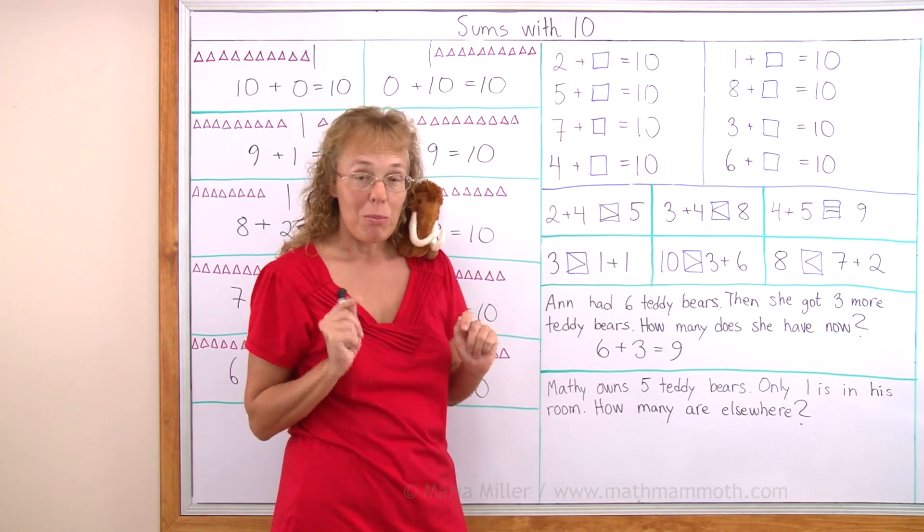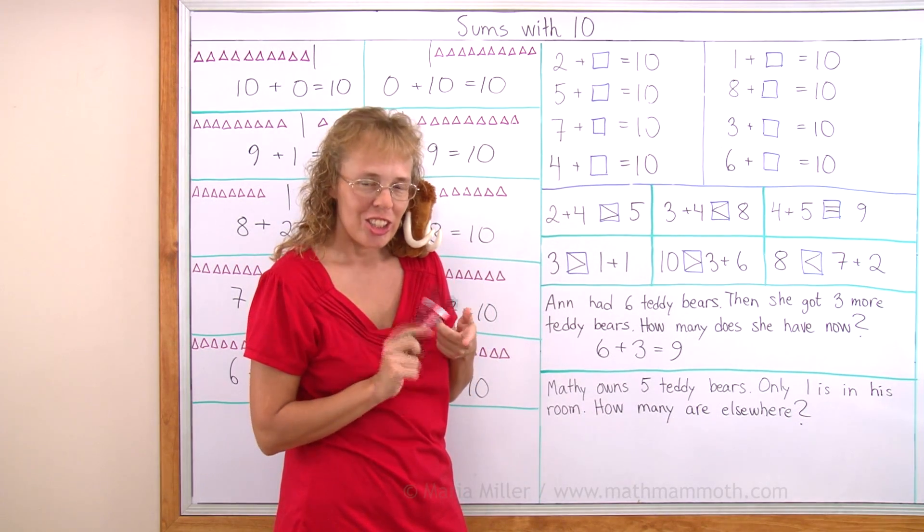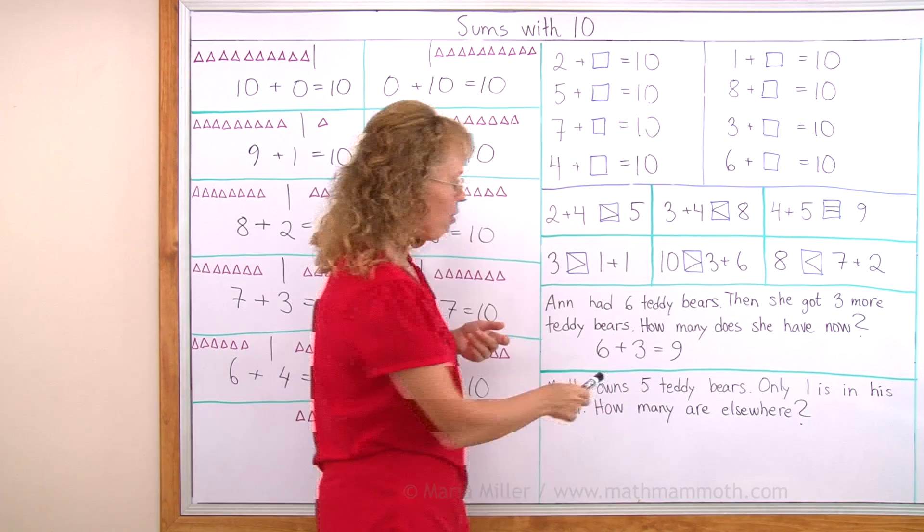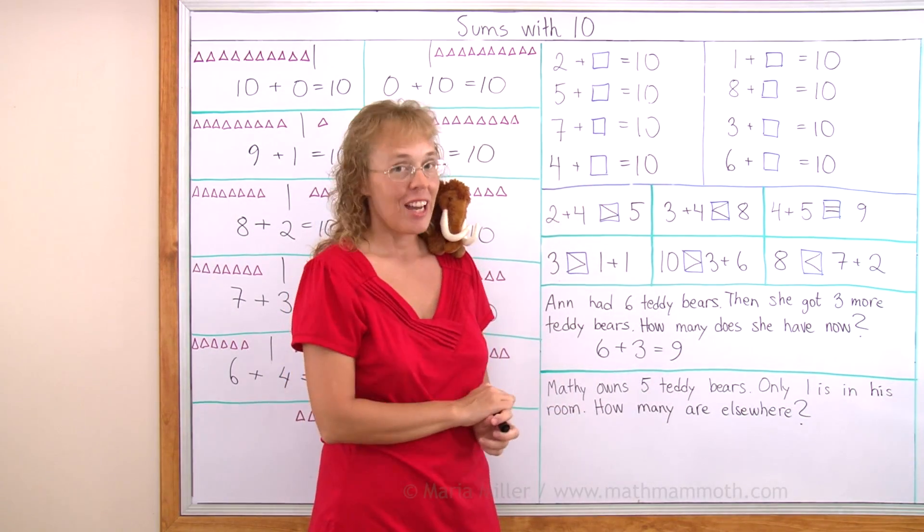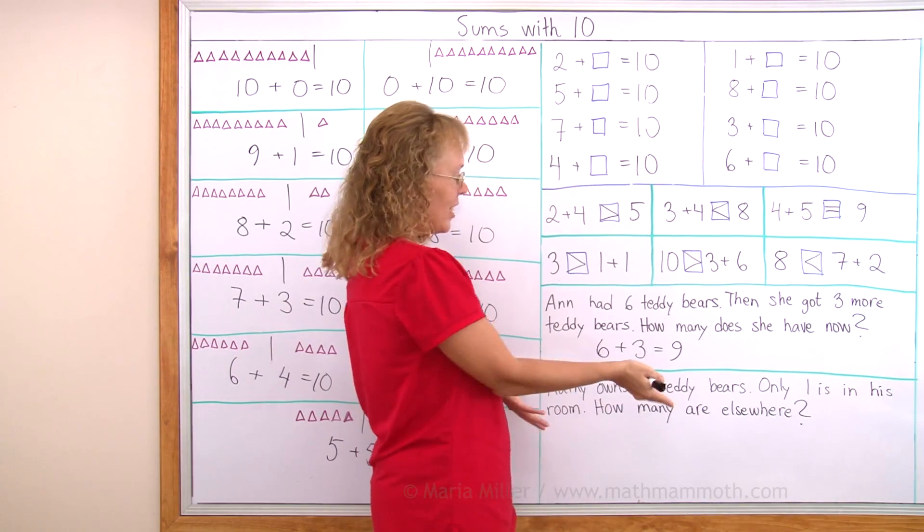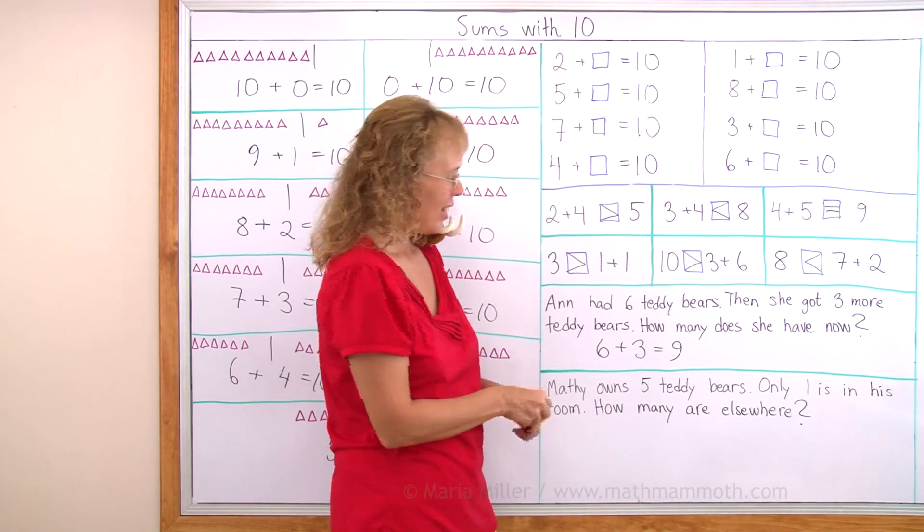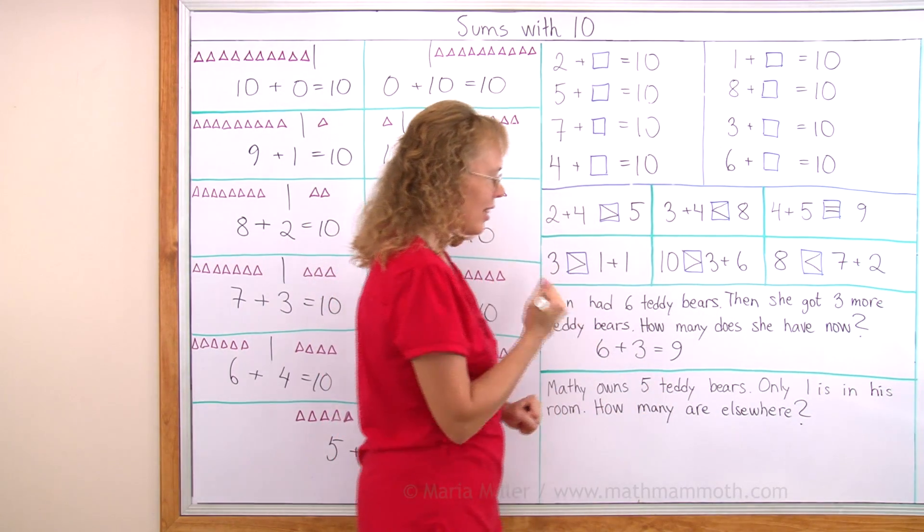In this problem you must not add 5 plus 1. There's 5 here and 1 here. But do not add those two numbers. That's the wrong answer. You cannot answer 6 are elsewhere. Instead, we think this way.